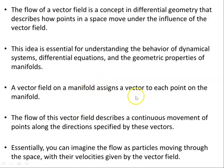A vector field on a manifold assigns a vector to each point on the manifold. I'll show you a diagram of that shortly. The flow of this vector field describes a continuous movement of points along the directions specified by these vectors. Essentially, you can imagine the flow as particles moving through the space with their velocities given by the vector field.